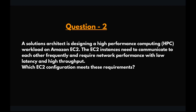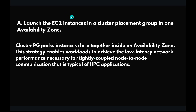The next question: a solutions architect is designing an HPC workload on EC2. The EC2 instances need to communicate with each other frequently and require low latency and high throughput. This question is very straightforward — when you want low latency and high network throughput, you use a cluster placement group. We will launch our EC2 instances in a cluster placement group in one availability zone. The benefit is that it packs instances closely together inside an AZ, enabling low latency and high throughput, which is very suitable for HPC applications.